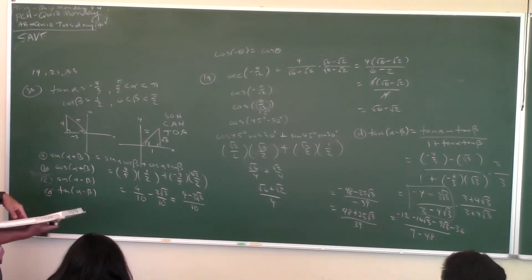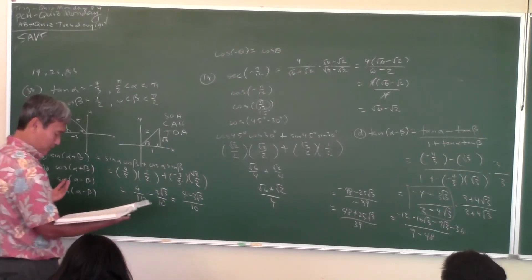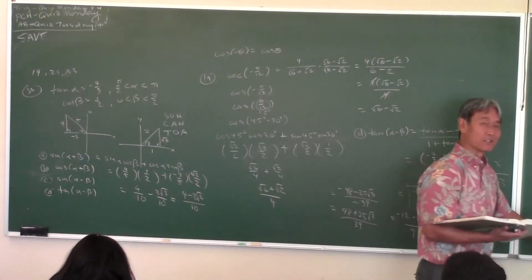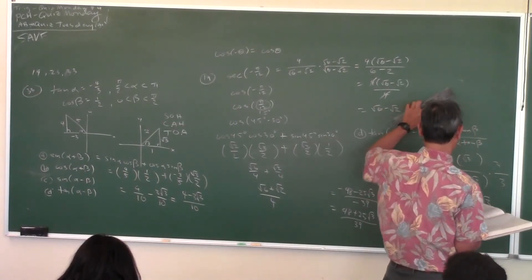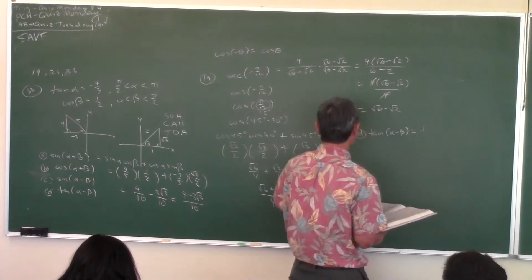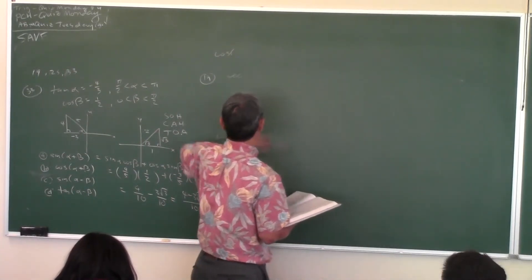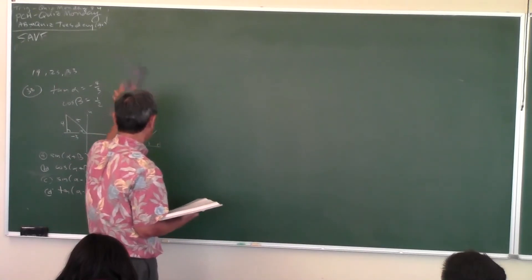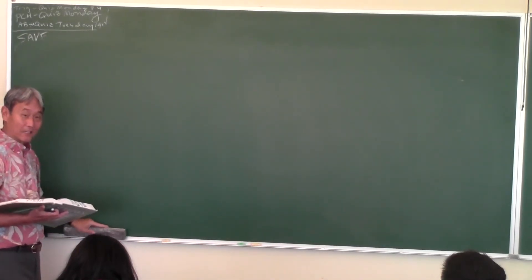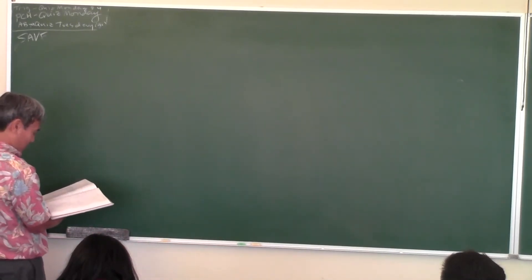Tonight's homework you're going to do proofs using these identities, so I'll just do a couple of them. We can finish a little early. Just when you thought you were done with proofs — no, we're just beginning. I'm going to do some even ones.